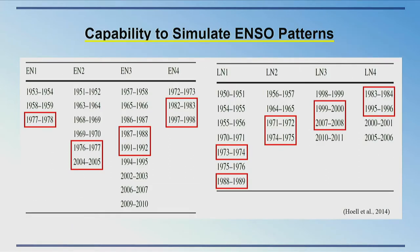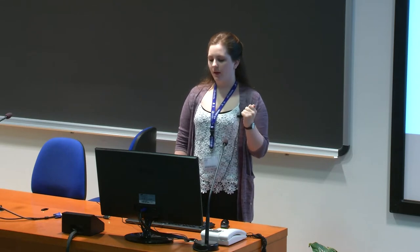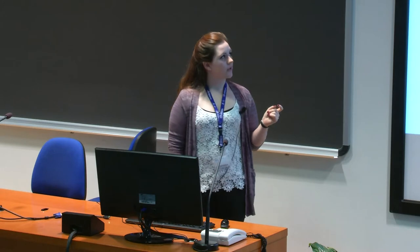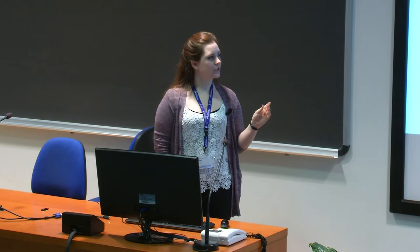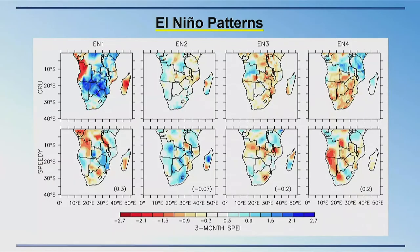Looking at the capability of SPEEDY to simulate the ENSO SPEI patterns: I selected dates provided by Hull for each of the eight patterns, choosing two years from each, and created composites of the SPEI values. Again, it's not too well simulated — this is probably linked to the precipitation issues or the high evapotranspiration values. Some patterns are almost an inverse of the observed, and some regions are simulated better than others.